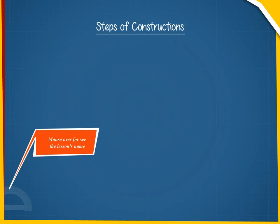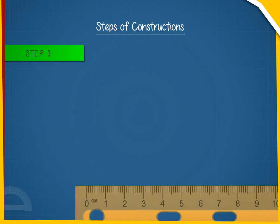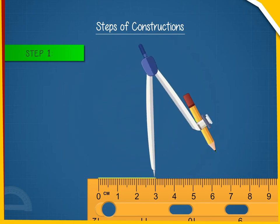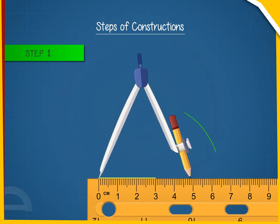Steps of Constructions Step 1. From the rough sketch, it is easy to see that triangle ABC can be constructed using SSS condition.